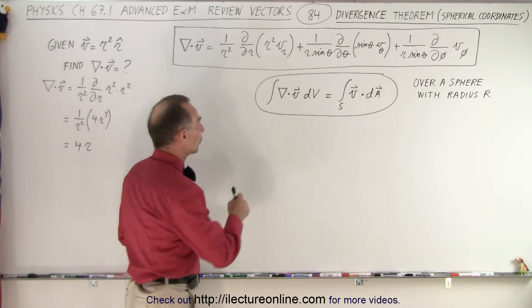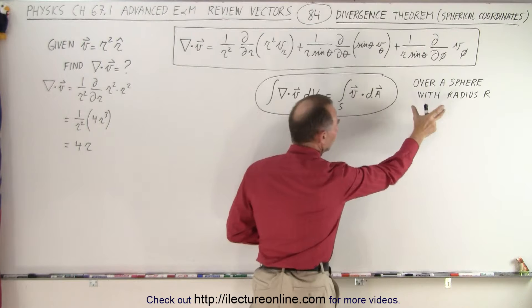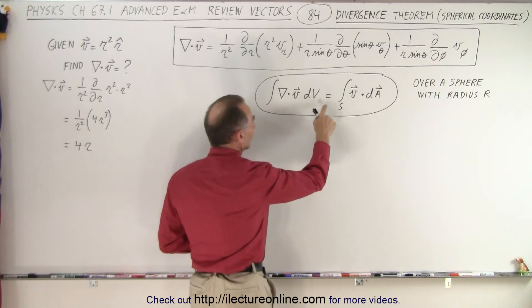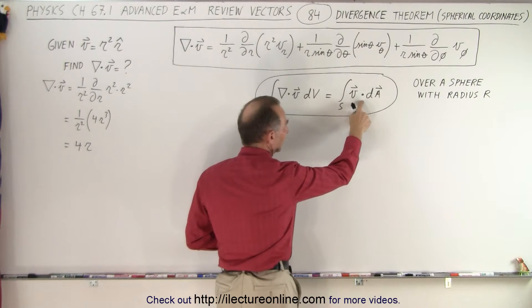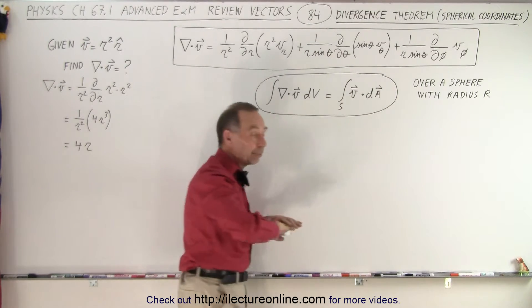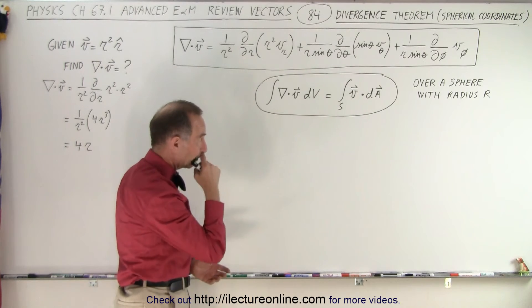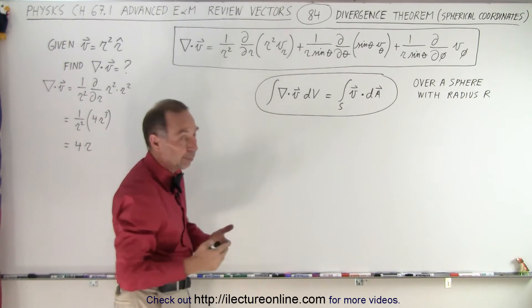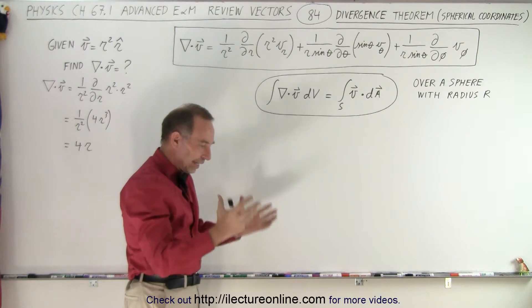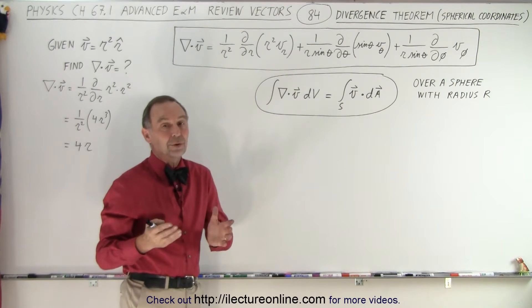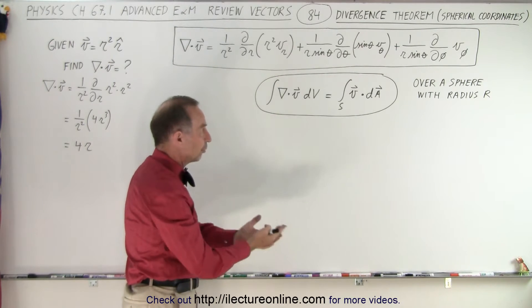What we're going to do is take the integral of the divergence over a volume — in this case over a sphere of radius r — and that should be equal to the vector function multiplied by a surface element, integrated over the entire surface of that sphere. That's the divergence theorem: the divergence integrated over the volume should equal the vector function integrated over the surface of that volume.